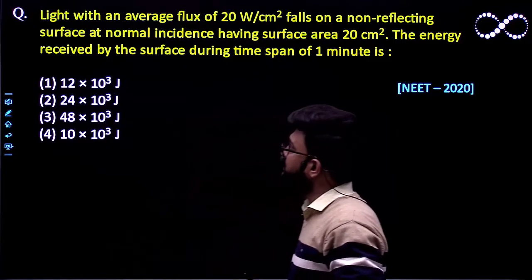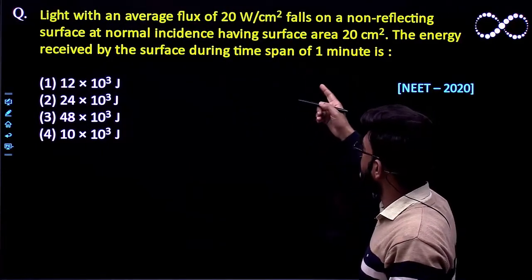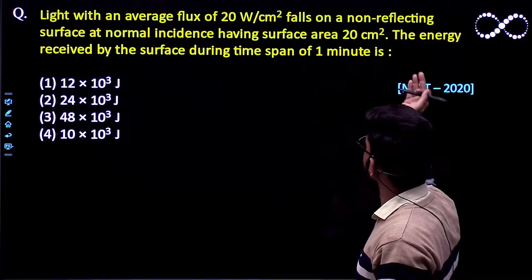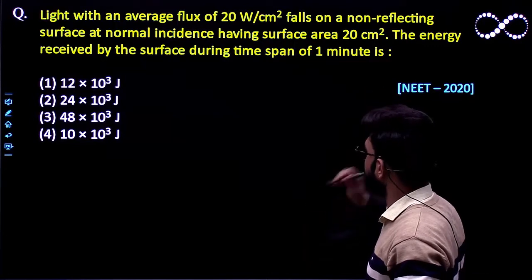Question says light with the average flux of 20 watt per centimeter square falls on a non-reflecting surface at normal incidence having surface area of 20 centimeter square.